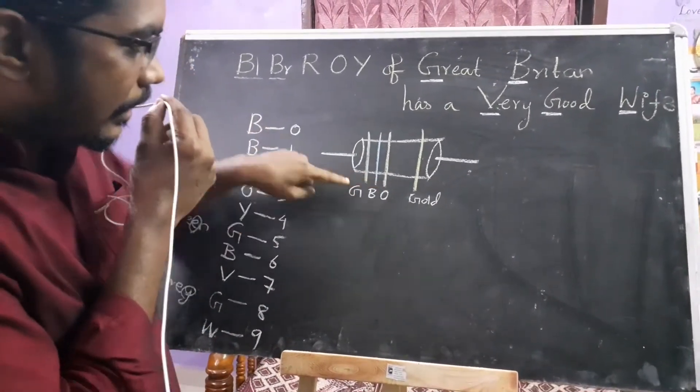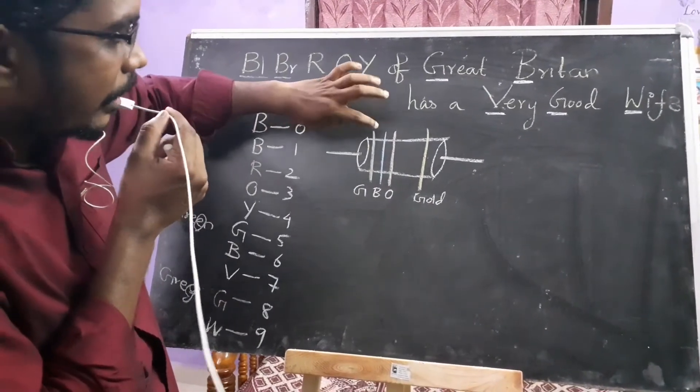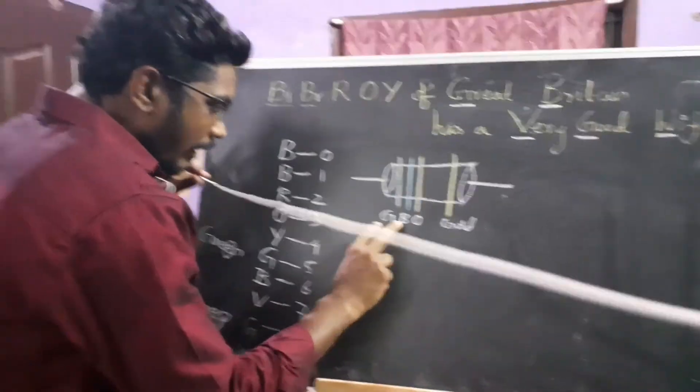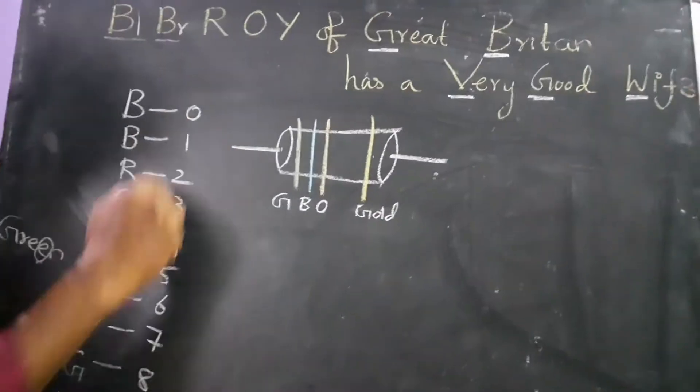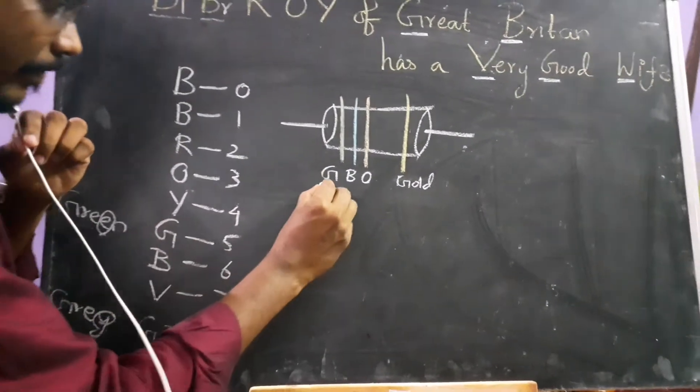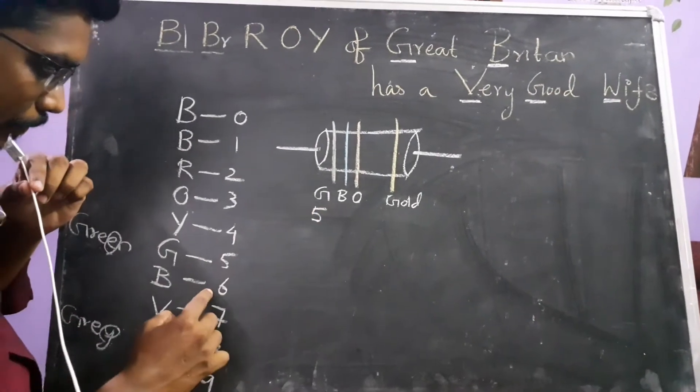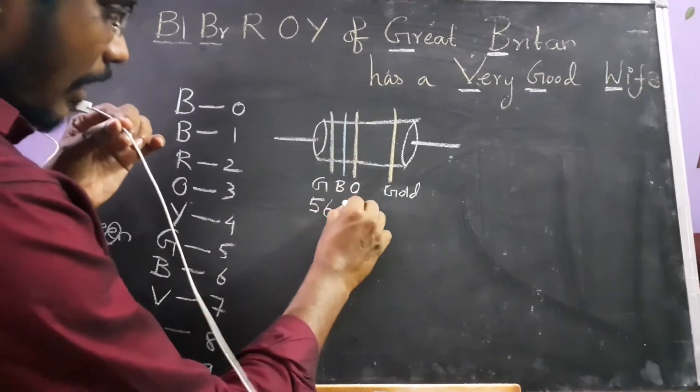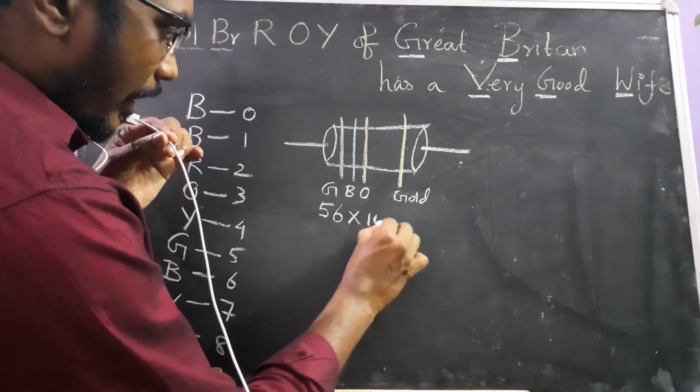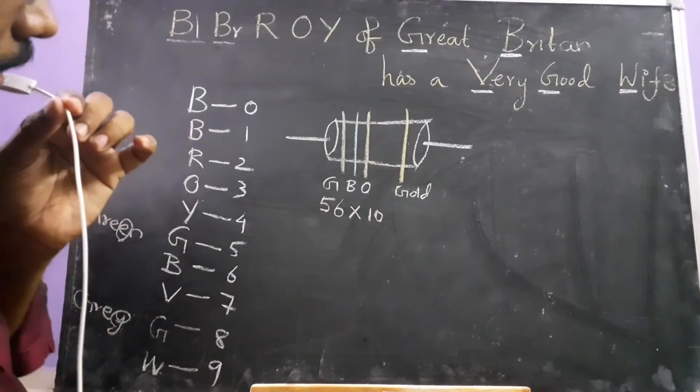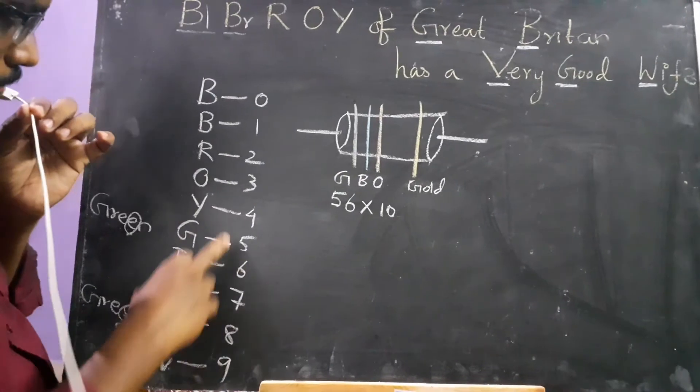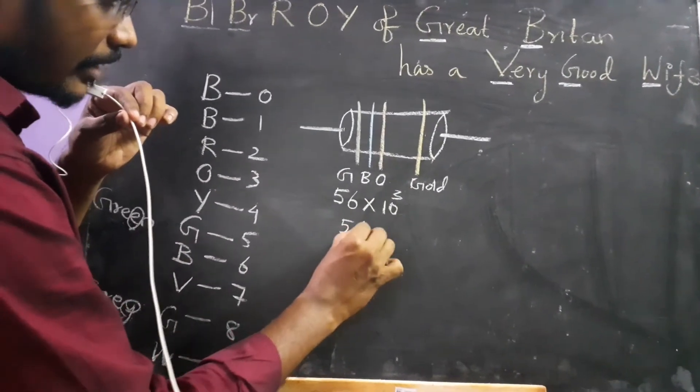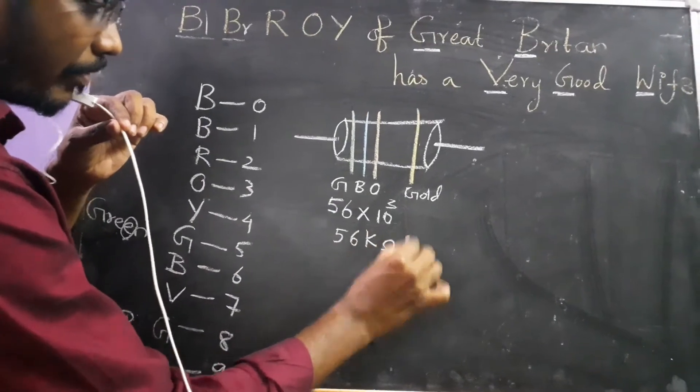The model 3 is green, blue and orange. If you have two colors, you can change the number. Green is 5 and blue is 6, so 56. If you change the color, it should be raised as multiples of 10. Orange is 3, so 10 to the power 3. 56kΩ is the value.